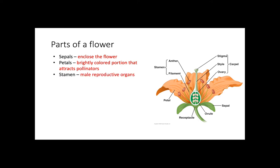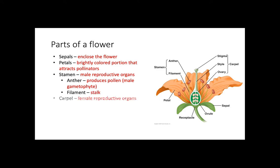The stamen includes the male reproductive organs: the anther, which produces pollen, or the male gametophyte, and the filament, or the stalk.